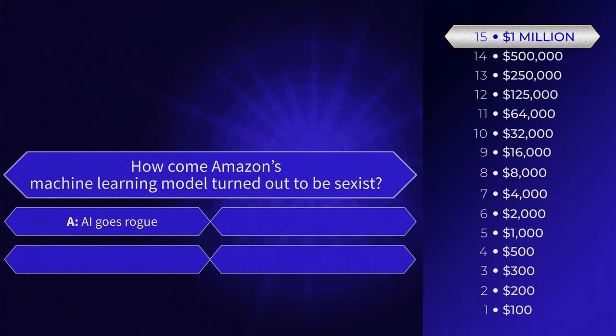A. AI goes rogue. B. Inexperienced data scientists. C. Faulty data set. D. Alexa gets jealous.